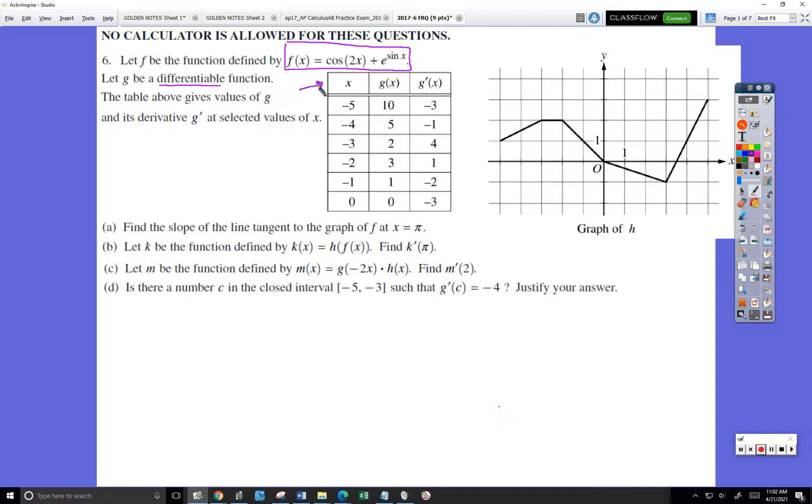This graph of H shows up somewhere in the problem. I had to kind of rearrange it to get it to fit on the screen. Part a says find this—again, slow and careful, not the equation of the line tangent, just the slope of the line tangent to f at x equal π.